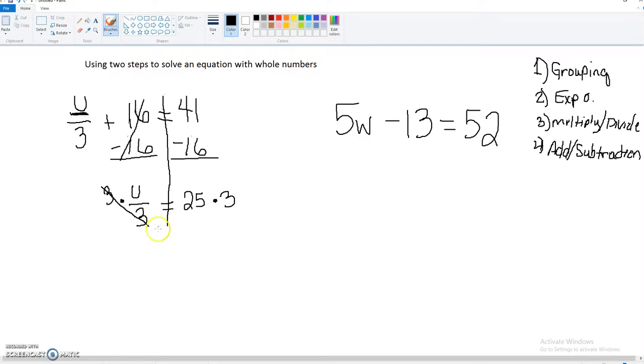Which cancels the 3 on this side. And 25 times 3 is 75, which is what u equals. So that's the answer for this one.